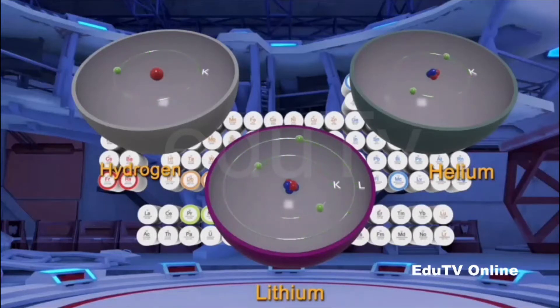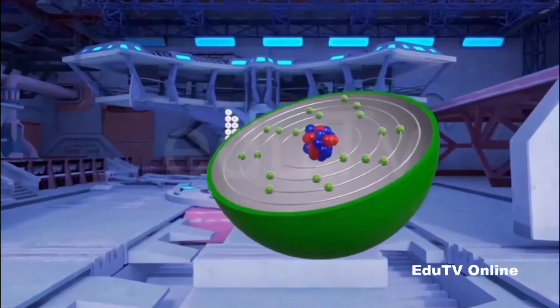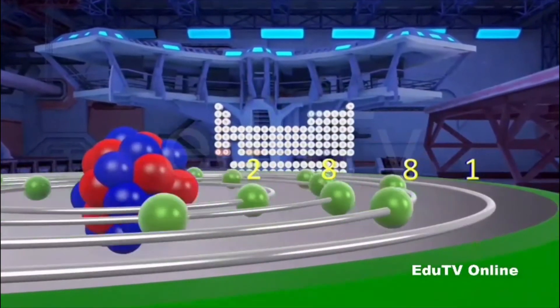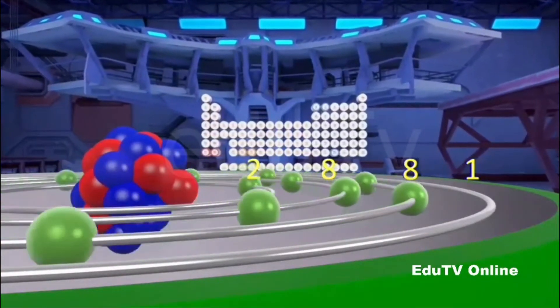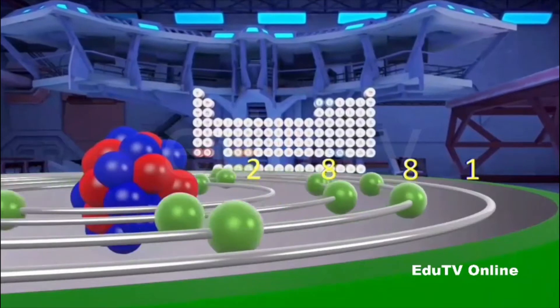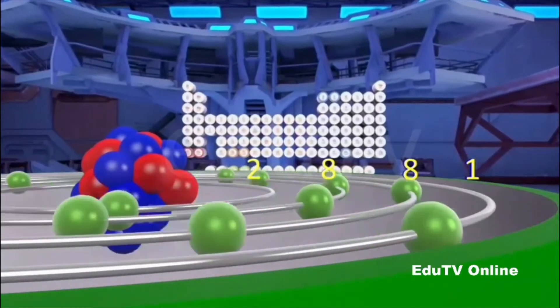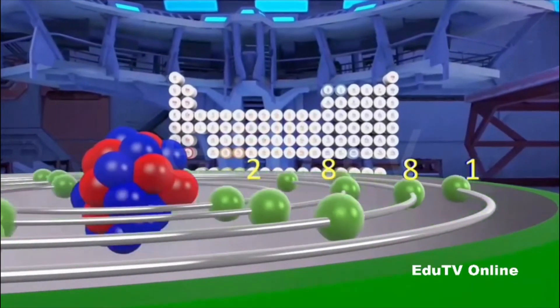So its electronic configuration is 2, 1. However, there is a convention which does not allow the names of the shells to be mentioned in the electronic configuration. The order in which the electrons are arranged and their numbers are mentioned to indicate the order of the shells, such as K, L, M, N, respectively.